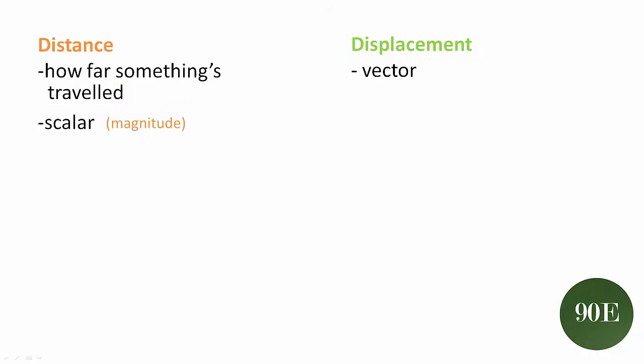So distance is something that you're probably familiar with already. It's how far something or someone has traveled and it's a scalar measurement, so it only has a size associated with it, a number.